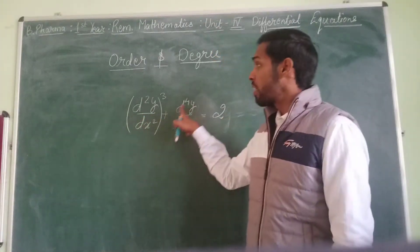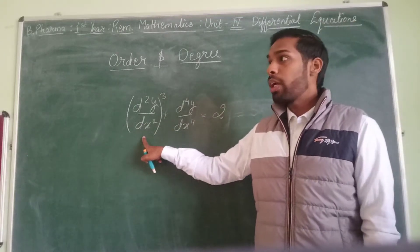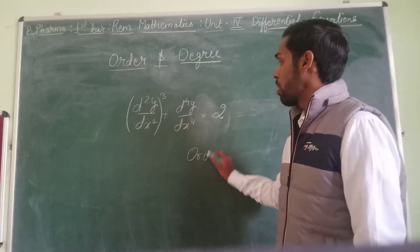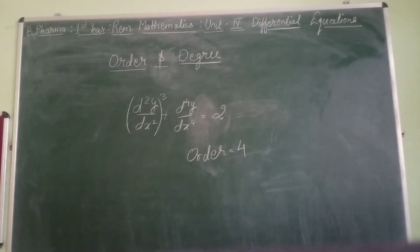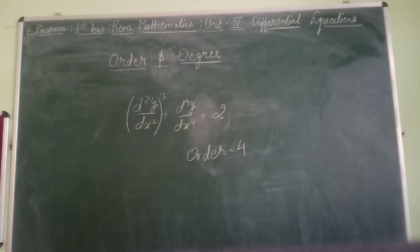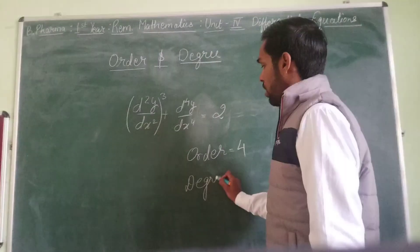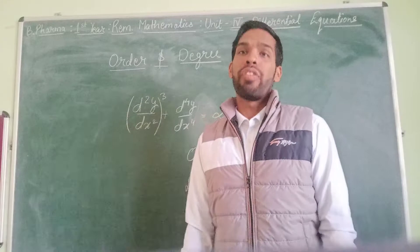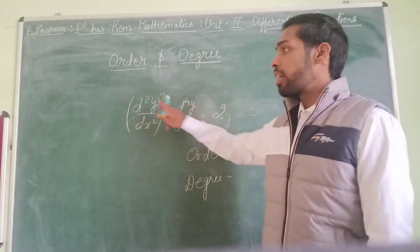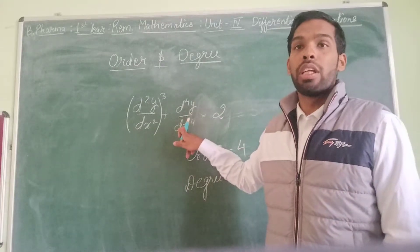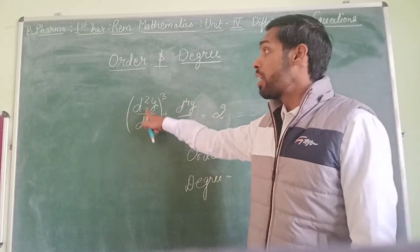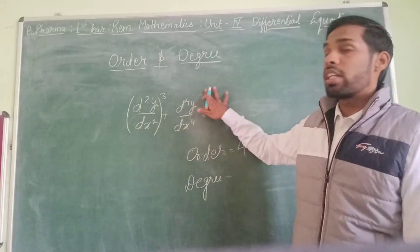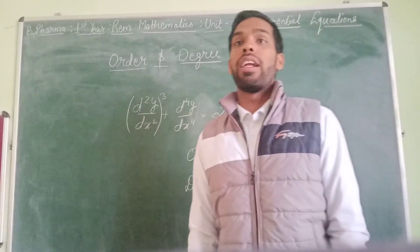Since the fourth-order derivative is the highest, this differential equation has order 4. For degree, we look at the power of the highest-order differential term. In this equation the fourth-order derivative term has power 3, so the degree is 3. This is how we determine the order and degree of a differential equation.